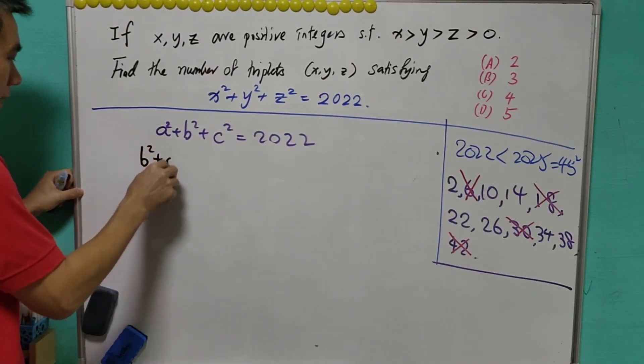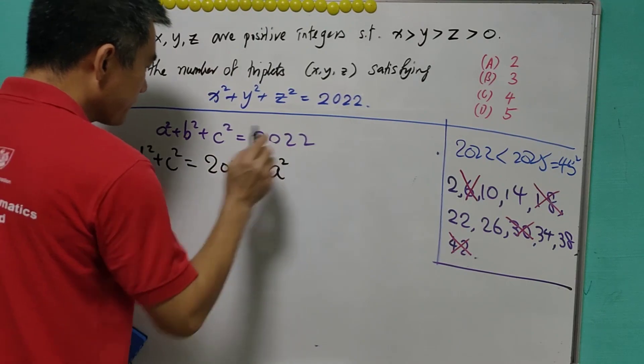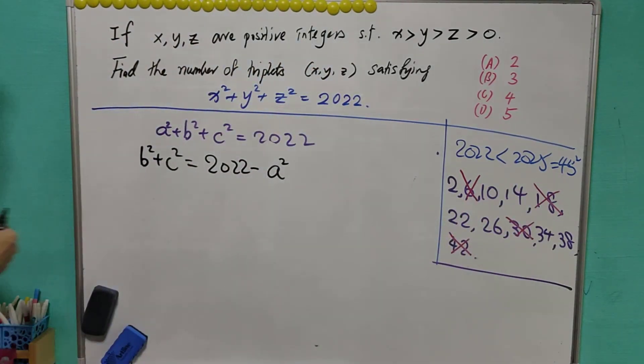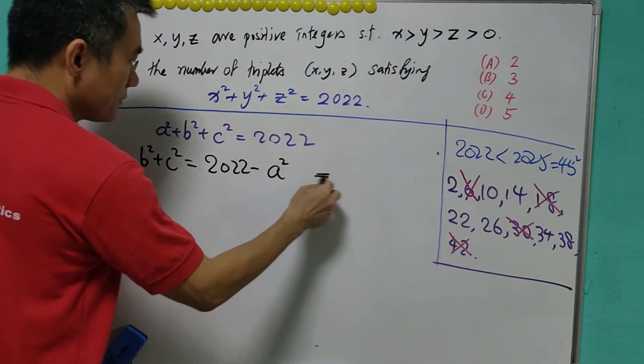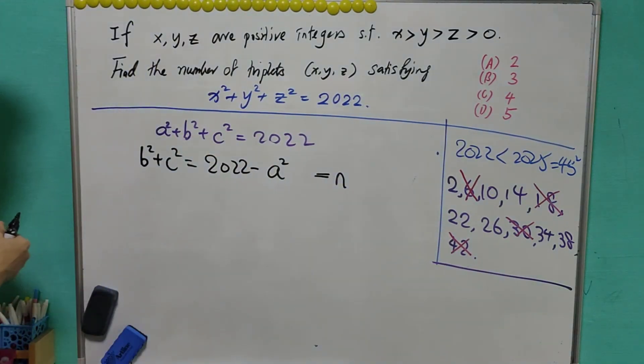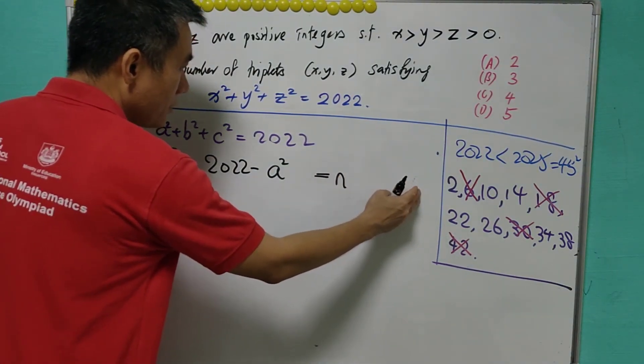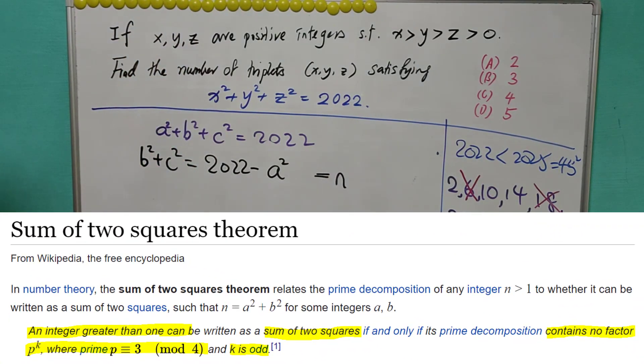Now, b square plus c square is equal to 2022 minus a square, where a can be sum of this value. There is a theorem saying that the sum of square equals to sum n has the integer solution if and only if, when n written as a prime factorization, the prime of the form 4k plus 3 must be of even power. Otherwise, it has no solution.